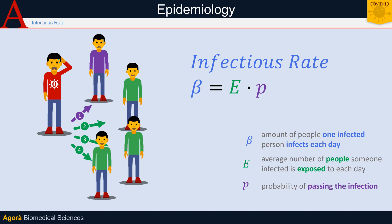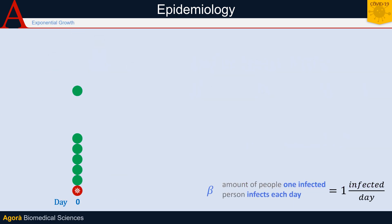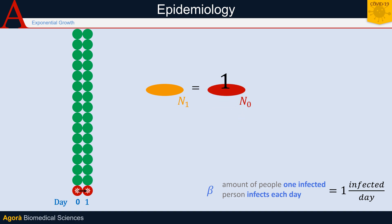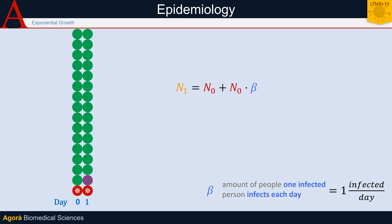Let's say that our patient zero meets four people every day, and the probability of contagion is one out of four. The number of infected people the next day will presumably be one — patient zero, who has not healed yet — plus one, the first infected. Remember that in our pattern, every infected person only infects one other person every day. The formula we use can be rewritten by factoring out the number of infected people on day zero.